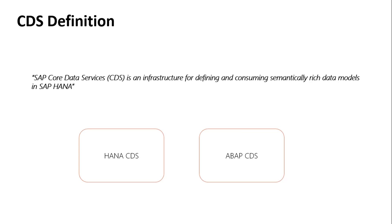CDS comes in two flavors: HANA CDS and ABAP CDS. HANA CDS is written in native SQL. This is basically on HANA where there is no ABAP layer — there is a core HANA database where you write CDS and use it further. It is native to HANA database and you can't use it anywhere else, because that is the language only understood by HANA database.